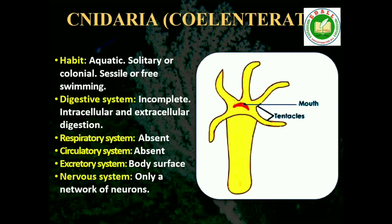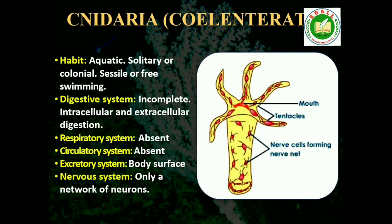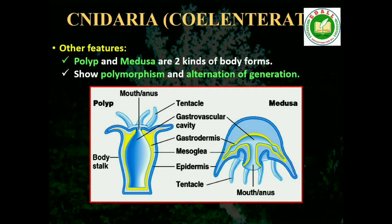Cnidarians exhibit tissue level of organization and are diploblastic. They have a central gastrovascular cavity with a single opening, mouth on hypostome. Digestion is extracellular and intracellular. Some of the cnidarians, for example corals, have a skeleton composed of calcium carbonate.